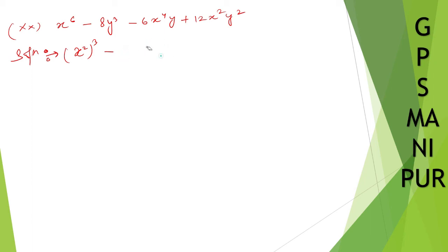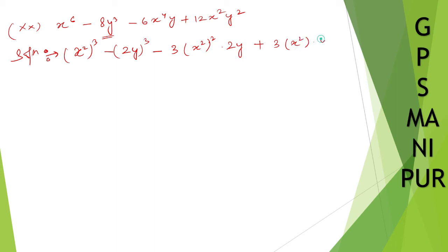8y³ I can write as (2y)³, so b = 2y. The formula is a³ − 3a²b + 3ab² − b³ = (a − b)³. So a³ − b³ − 3a²b + 3ab² gives us (a − b)³, and the answer is (x² − 2y)³. That's all — thank you so much, we will meet in the next video.